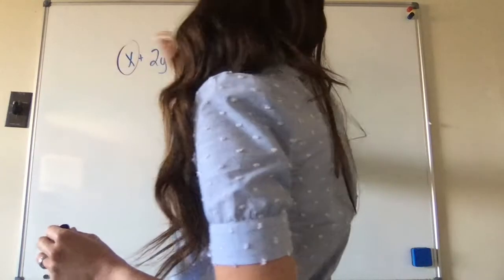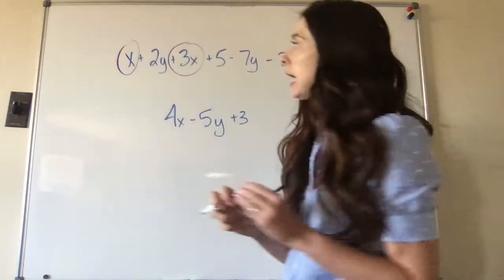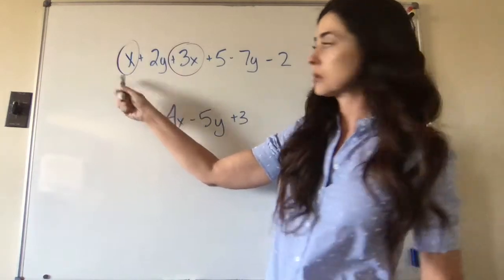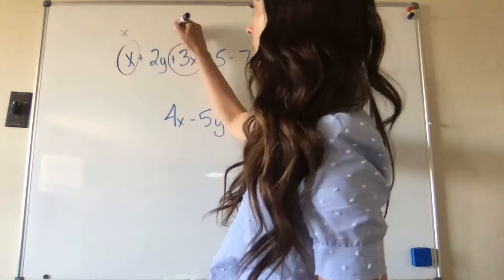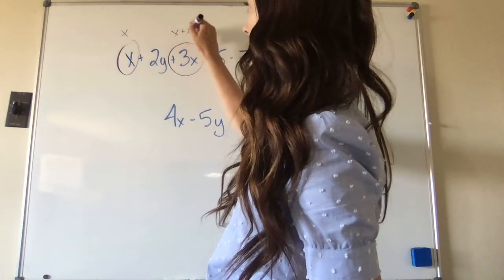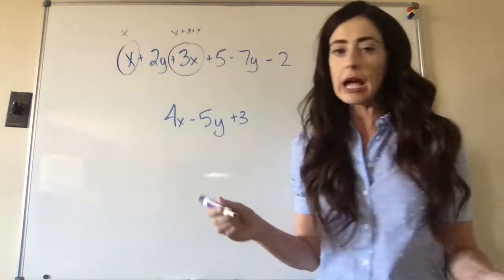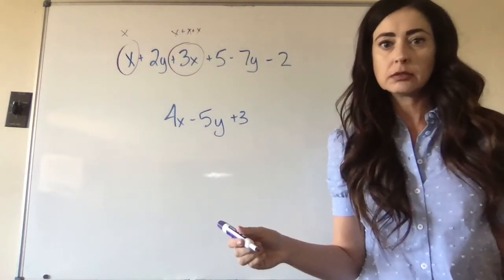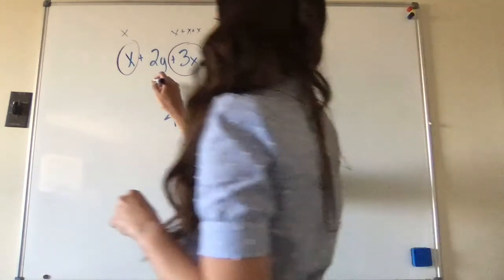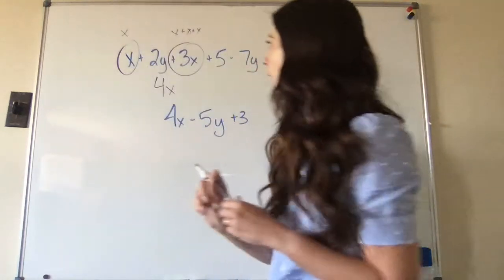So I'm going to circle all of my x's, and this is like saying I have one x, and this is like saying I have three x's. So how many x's do I have total? Four x's.